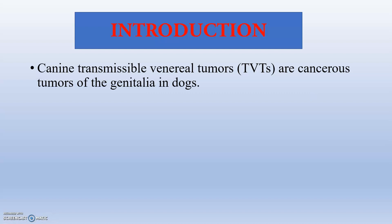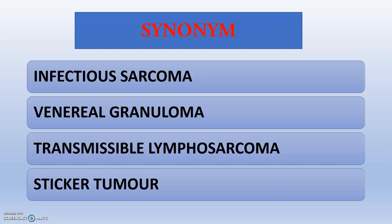Canine transmissible venereal tumours are cancerous tumours of the genitalia in dogs. 'Canine' refers to dogs, 'transmissible' means transmission is happening, and 'venereal tumour' is related to genitalia tumours. The synonyms are infectious sarcoma, venereal granuloma, transmissible lymphosarcoma, and sticker tumour. You have to focus on sticker tumour — it will be asked in many MCQ examinations.